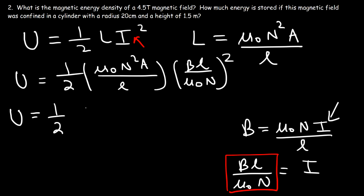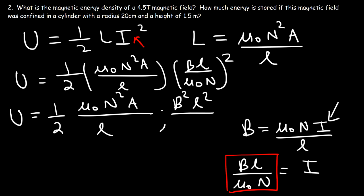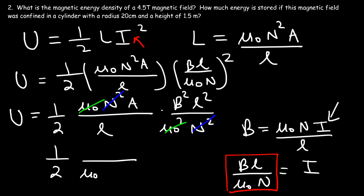What we have now is one-half mu zero n squared times A divided by L, multiplied by B squared times L squared over mu zero squared times n squared. We can cancel n squared, and we can also cancel mu zero — but one remains in the denominator. We can also cancel one power of L, leaving one on top, giving us area times B squared.